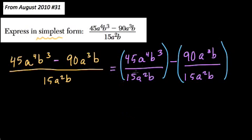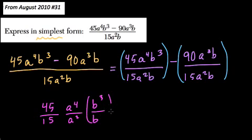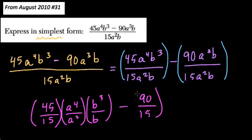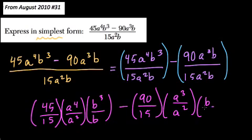...the rest is fairly straightforward because in the first term, you have 45 over 15 times a to the 4th over a squared. I'm just dividing like terms, and then b to the 3rd over b. So the same variables are being divided and the same numbers are being divided. You don't have to write this step out. And then we have 90 over 15 times a to the 3rd over a squared times b over b.